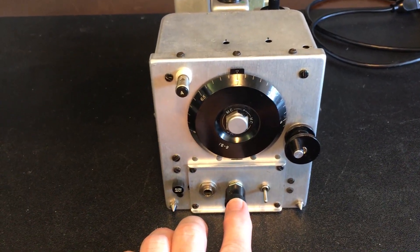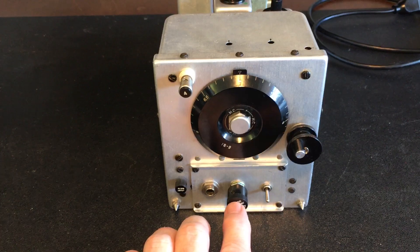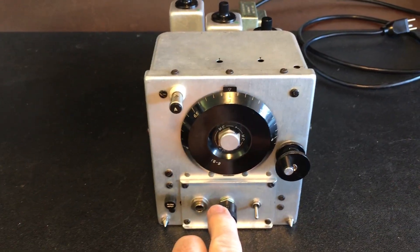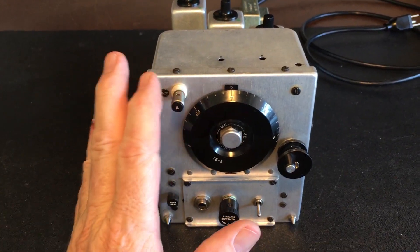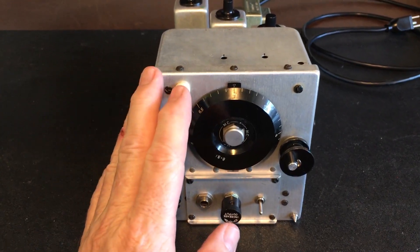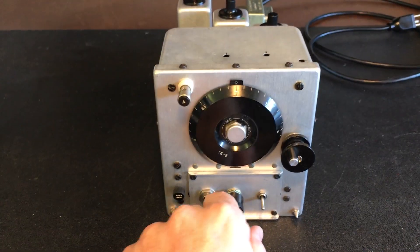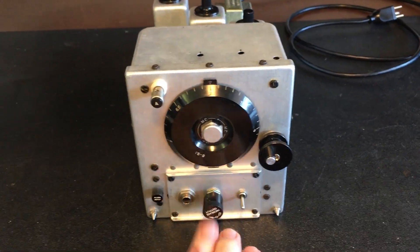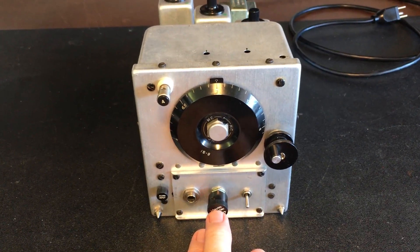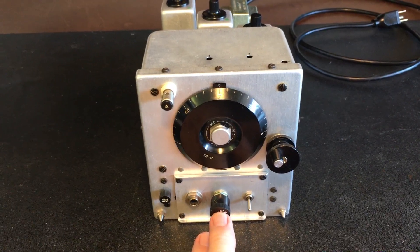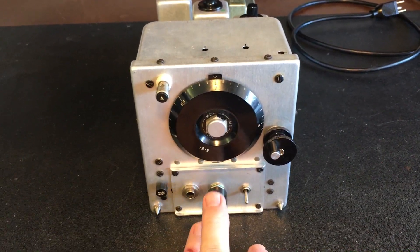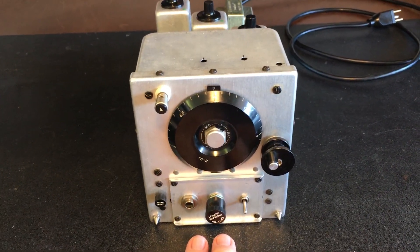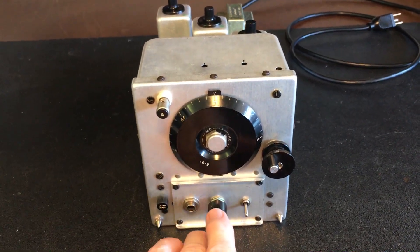This is no longer the volume control; this is now the sensitivity control. The reason for that is if you get a very strong overloaded signal, you can reduce the gain by simply lowering it. It also comes in handy for adjusting single sideband and CW versus AM.